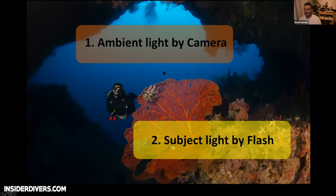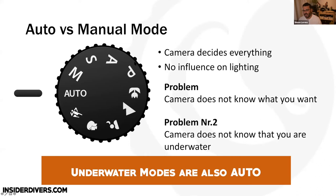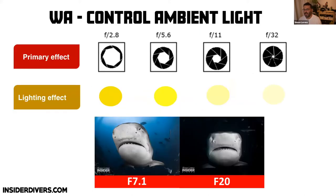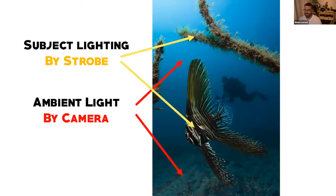A couple of topics we touched on in session two as well as the macro part: the differentiation between ambient light and subject light is super important — if you don't separate the two, you will not be able to take good photos. Also, make sure you're always in manual mode, knowing what aperture, shutter speed, and ISO can do for you and the primary and secondary effects you can achieve with these.